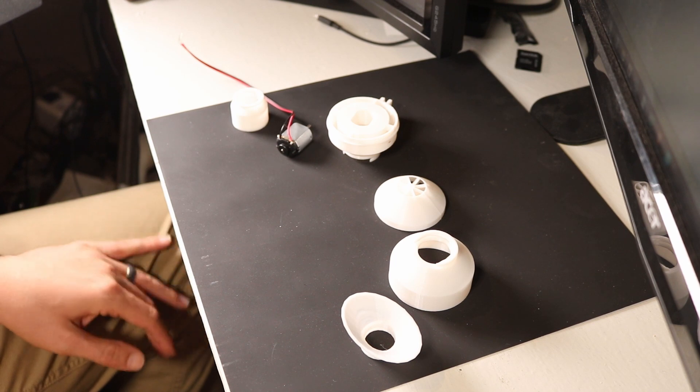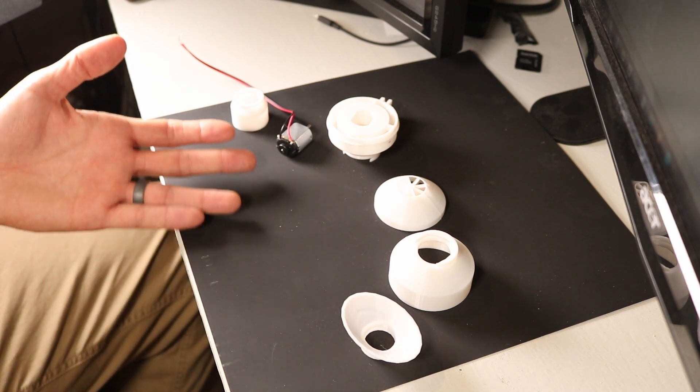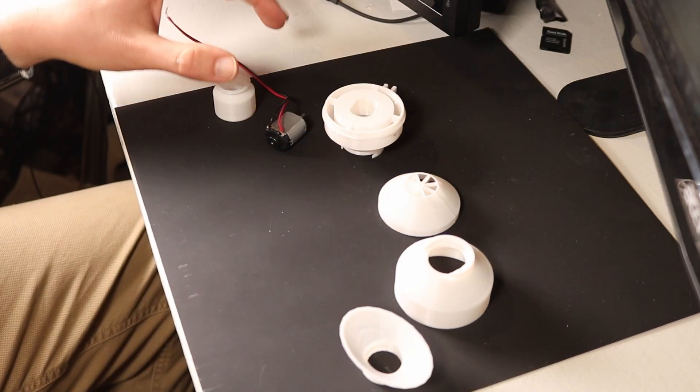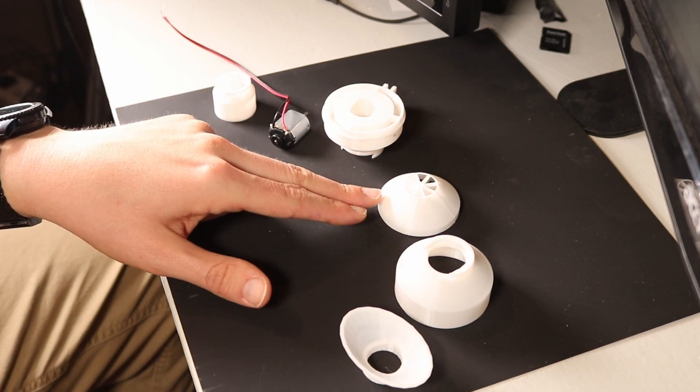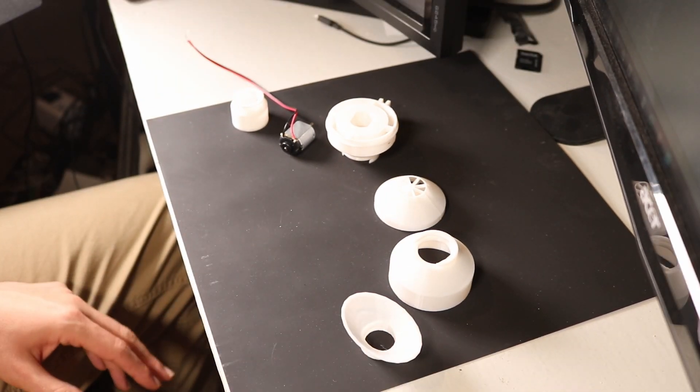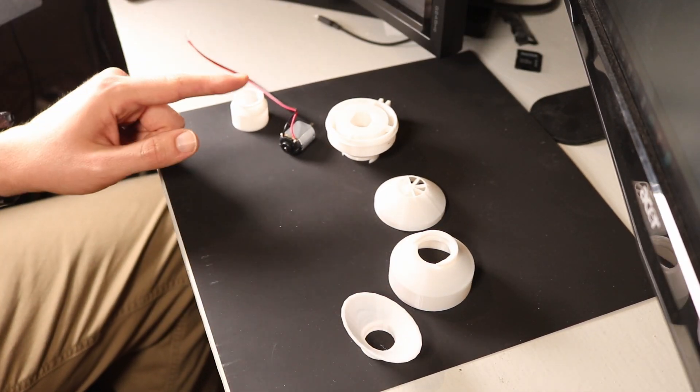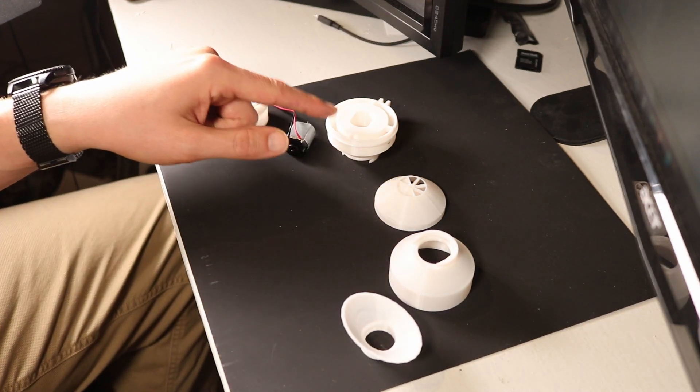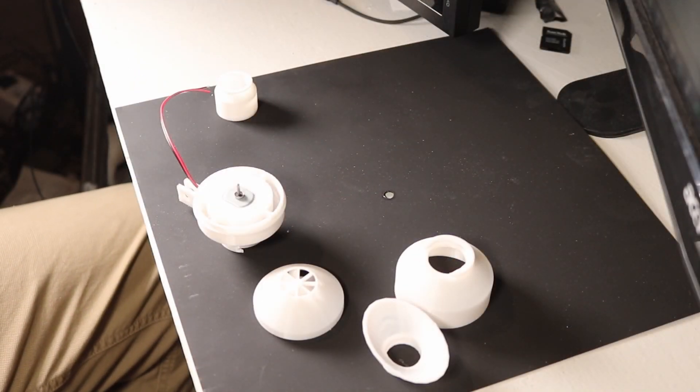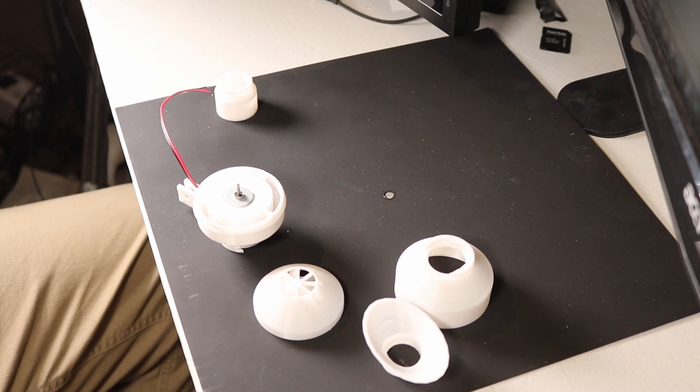So the build for this ends up being pretty simple once we have our parts printed. We have our motor mount, our motor, and then impeller and impeller cover. So the big things that we need to do first are feed the leads for the motor in and through the motor mount. Now we have our motor inside our motor mount and the next step is to mount our impeller onto our system.